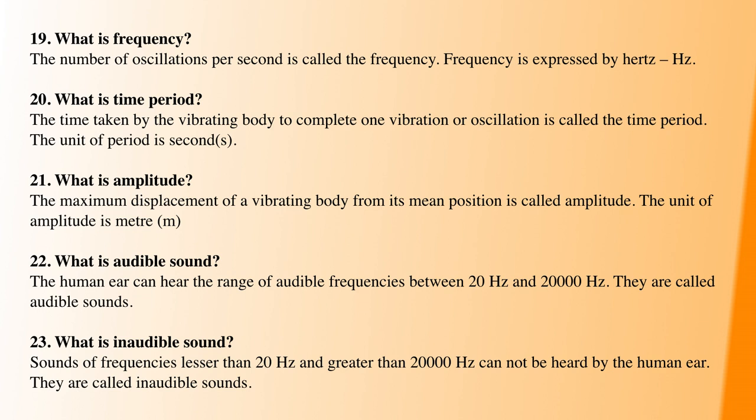Next question: what is audible sound? The audible sound range is very important. The human ear can hear sounds from 20 hertz to 20,000 hertz — this is the audible range. Inaudible sound is any sound below 20 hertz or above 20,000 hertz. This range is very important to remember.